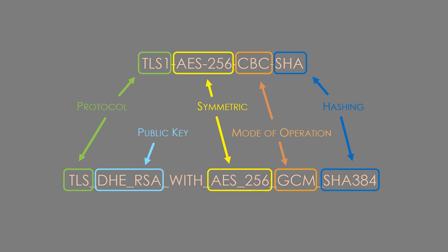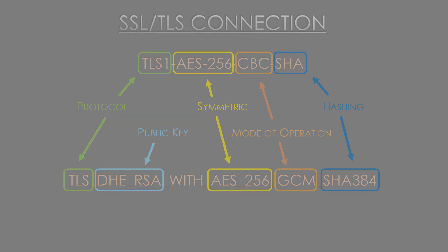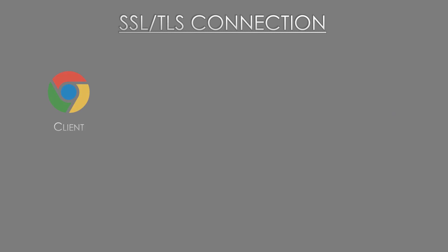Finally, there's a hashing algorithm for integrity — it's pretty common to see some variant of SHA in most cipher suites these days. So now when you're configuring a web server or some other network device and you see a cipher suite, you should be able to decode each of the components it uses. Let's see this process with a very simplified example: an HTTPS connection from a client to a web server.